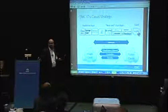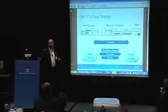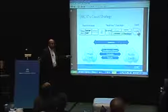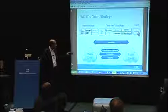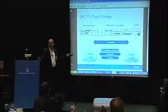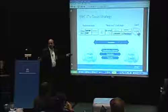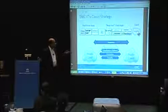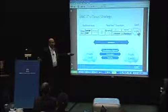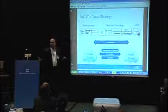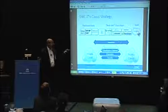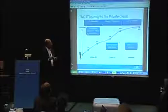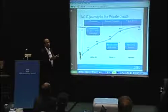A major part of infrastructure simplification is the cloud strategy. They have been building out their private cloud, starting with their own internal data center, virtualizing not only at the OS level but every place up and down the stack. The general model is to continue evolving the private cloud and stretch into the public cloud through mechanisms of federation, virtualization, information virtualization, and security.